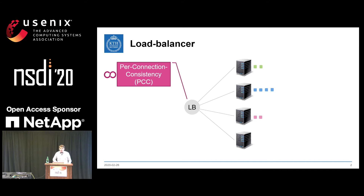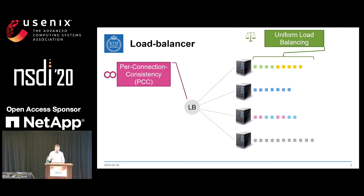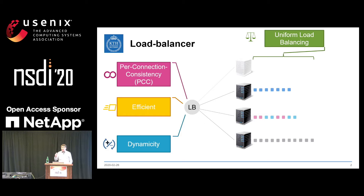If you don't have PCC, packets could go to the wrong server, which may eventually lead to a reset or timeout — a very bad user experience. You'd also like the load balancer to ensure that servers get more or less the same load, approaching uniform load balancing. Because the load balancer may receive millions of requests to dispatch to thousands of servers, you'd like it to be very efficient. Finally, you'd like it to be able to drain connections from some servers and add new servers according to current load or for planned maintenance.